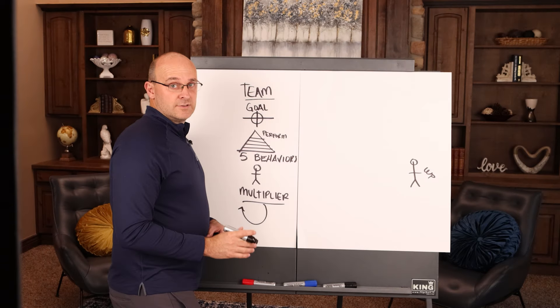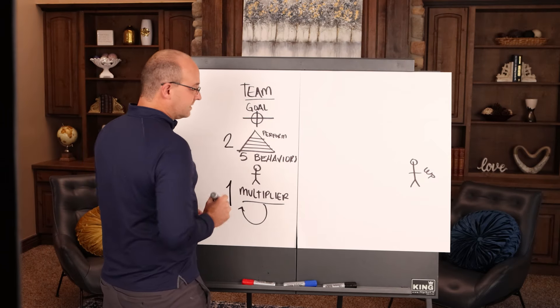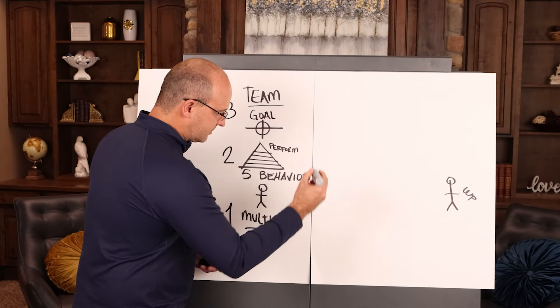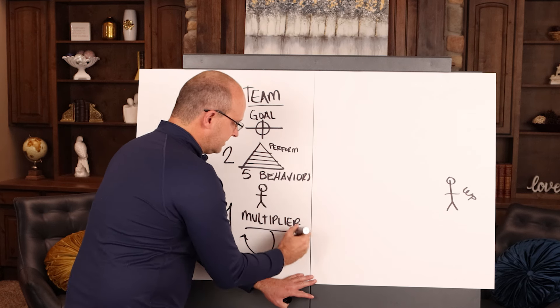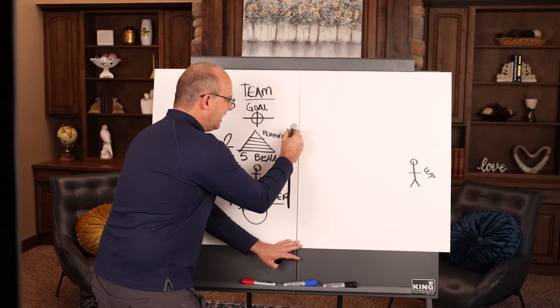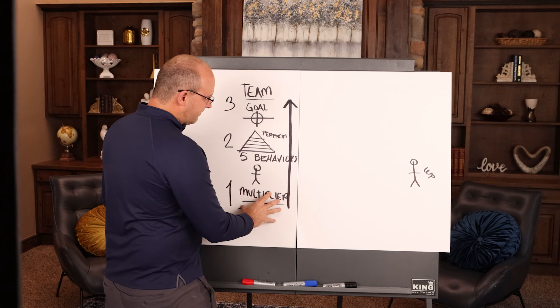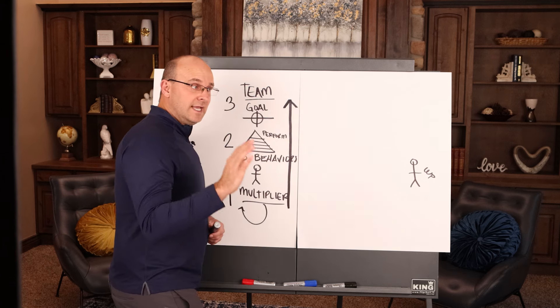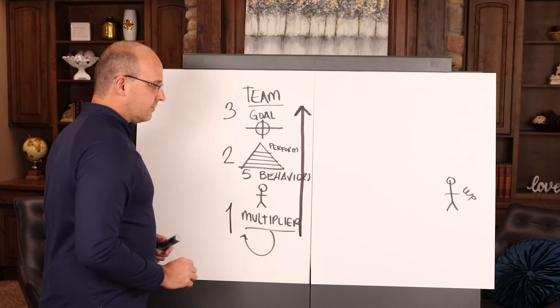These three things are always what a project needs: multiplier leader, the team using the five behaviors, and a strenuous performance goal. The need to accomplish this and the support from the multiplier leader elevates everybody on that team to be high performing. Otherwise there's no need for support, there's no need for the behaviors unless you have a strenuous performance goal. Anytime I've ever had to recover a construction project, these three things were missing.